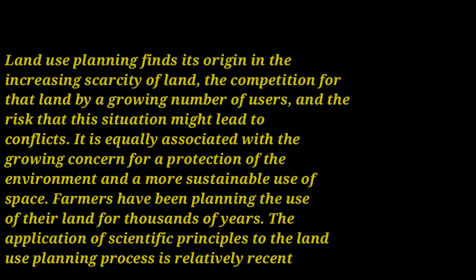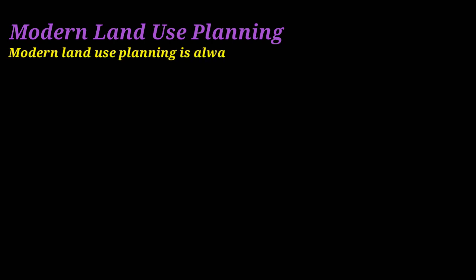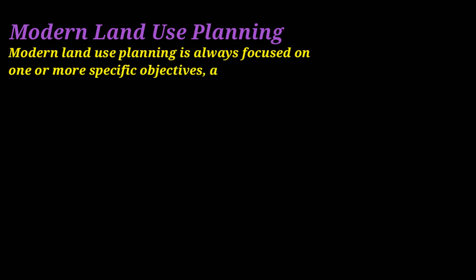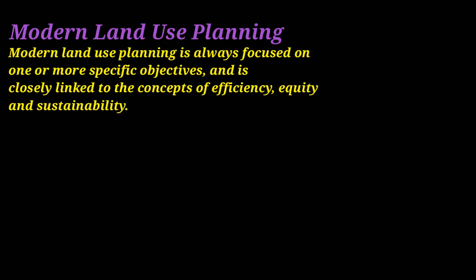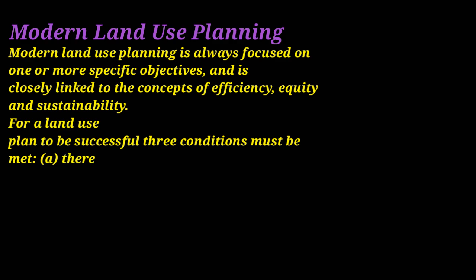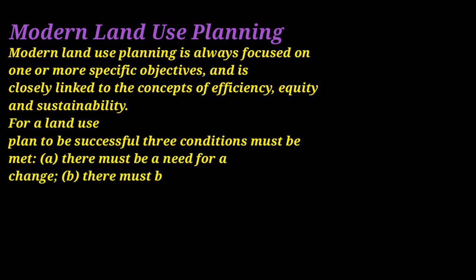Coming to the next point — modern land use planning. Before, whether in India or any other country, farmers were planning land use, but not in a scientific way. Modern land use planning is always focused on one or more scientific objectives and is closely linked to the concepts of efficiency, equity, and sustainability. The modern concept is sustainable development — defined as meeting the needs of the present generation without compromising the ability of future generations to meet their own needs and demands.